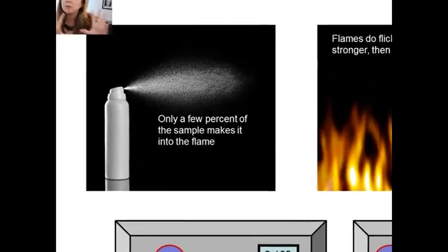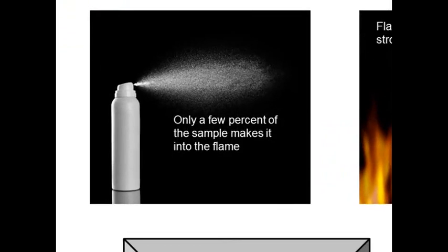One thing you have to do is nebulize your sample, turn it into a spray of little tiny droplets. And if you have too many big droplets out of that spray, then they never evaporate and you never get them into the flame. In fact, in AES spectrometers, you may only sample two to three percent of the total sample you're putting in.